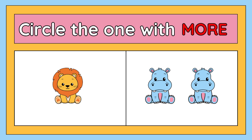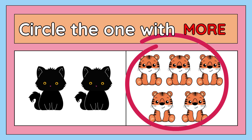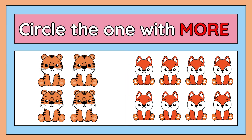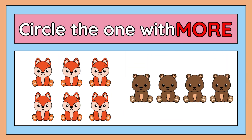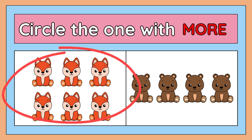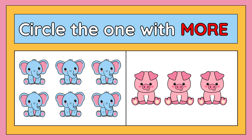Circle the one which is more. Correct. Circle the one which is more. Correct. Circle the one which is more. Correct. Circle the one which is more. Correct. Circle the one which is more. Correct.